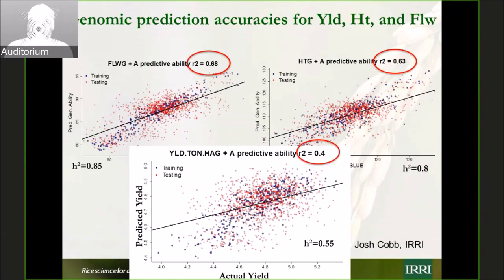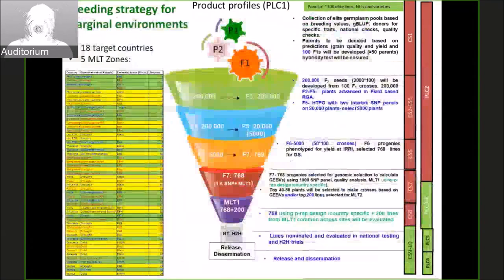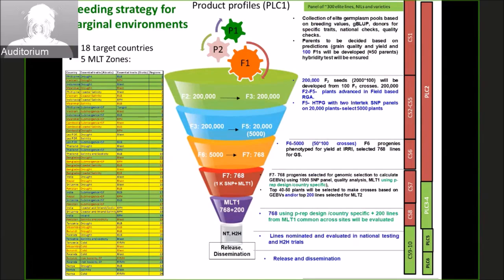We have every hope that by 2023, we will reduce the breeding cycle and complete it within three years, delivering a product in three years — that is the goal for the favorable environment. For the marginal environment breeding strategy, we are one step back because we have more complications such as avoiding stress. We have a different scheme for that, but up to F5, everything will go through RGA — either field-based or greenhouse-based.